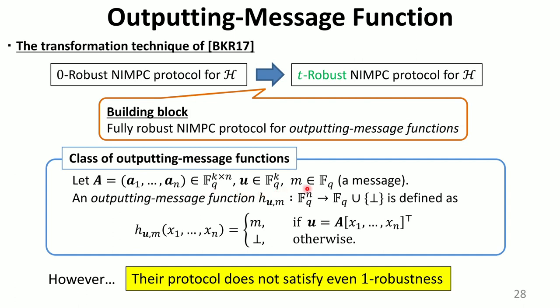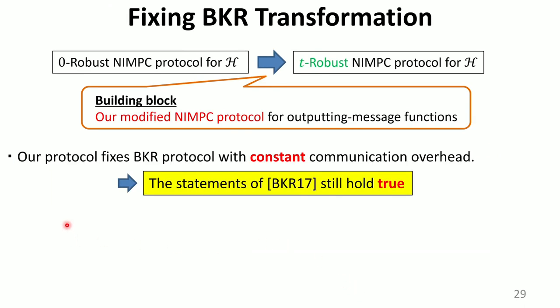Let A be a matrix over a finite field, U be a vector, and M be a scalar. An outputting message function associated with them outputs a message M exactly when the inputs satisfy a linear equation. They propose an NIMC protocol for those functions. However, we reveal that their protocol does not satisfy even one-robustness, and so their transformation is not secure either. In this work, we also propose a technique to fix their security issue without increasing their communication complexity. In summary, their statements still hold true, but it is necessary to replace their building block with ours.